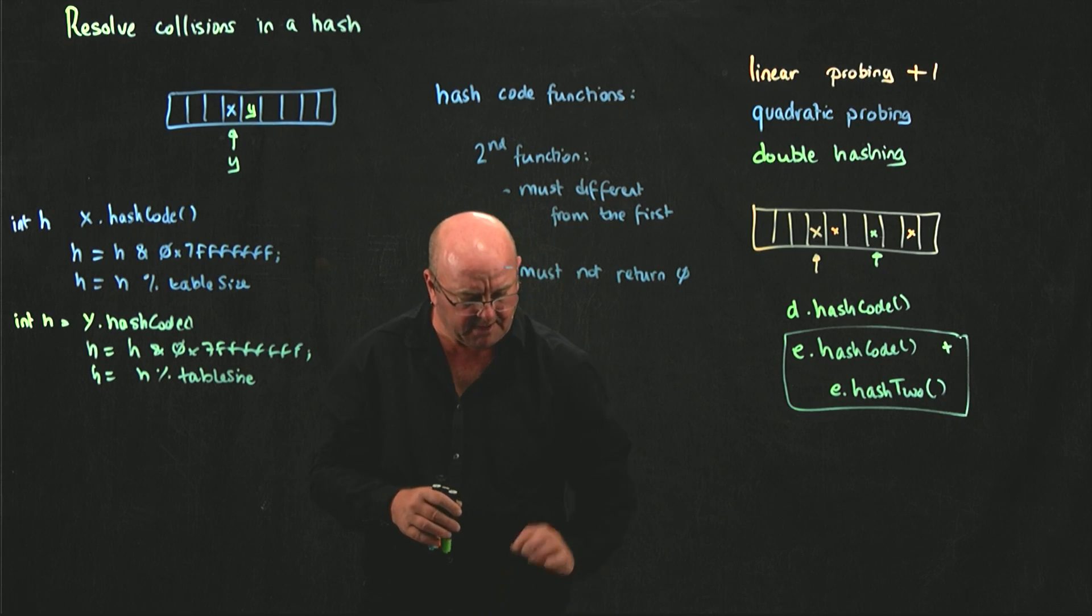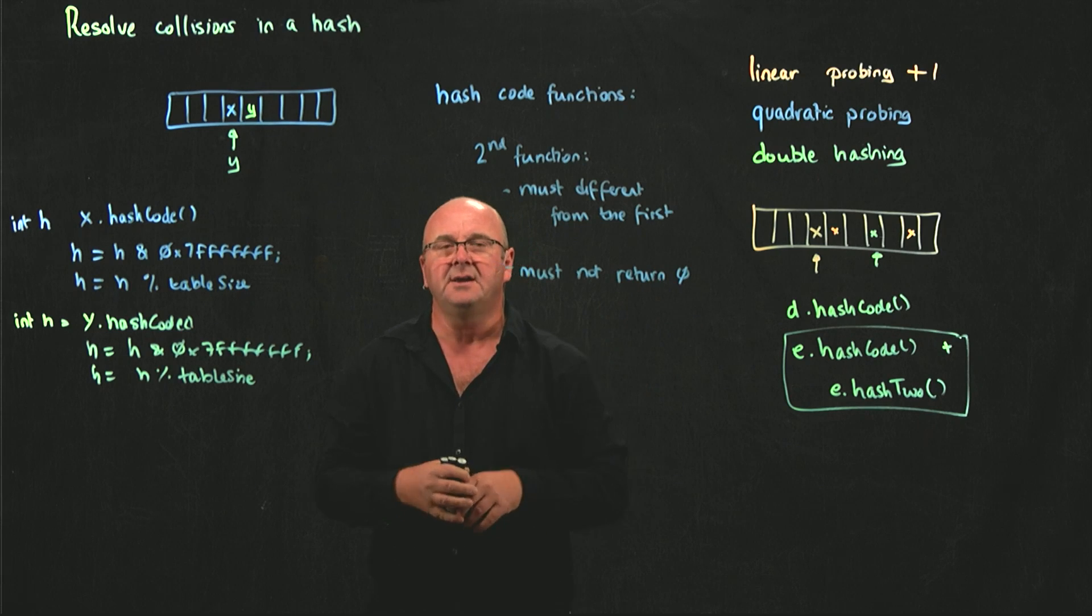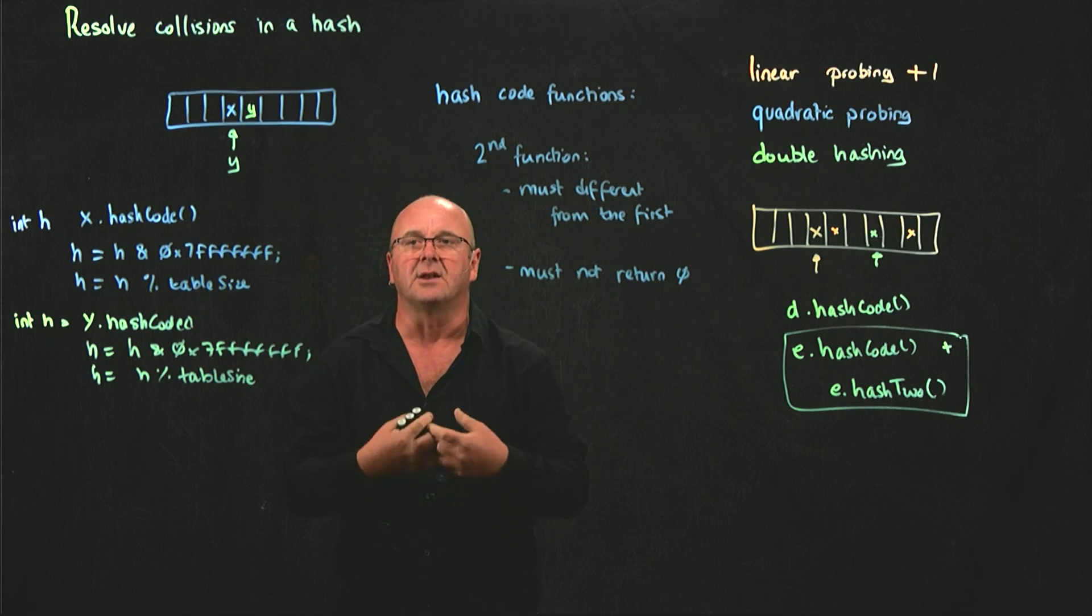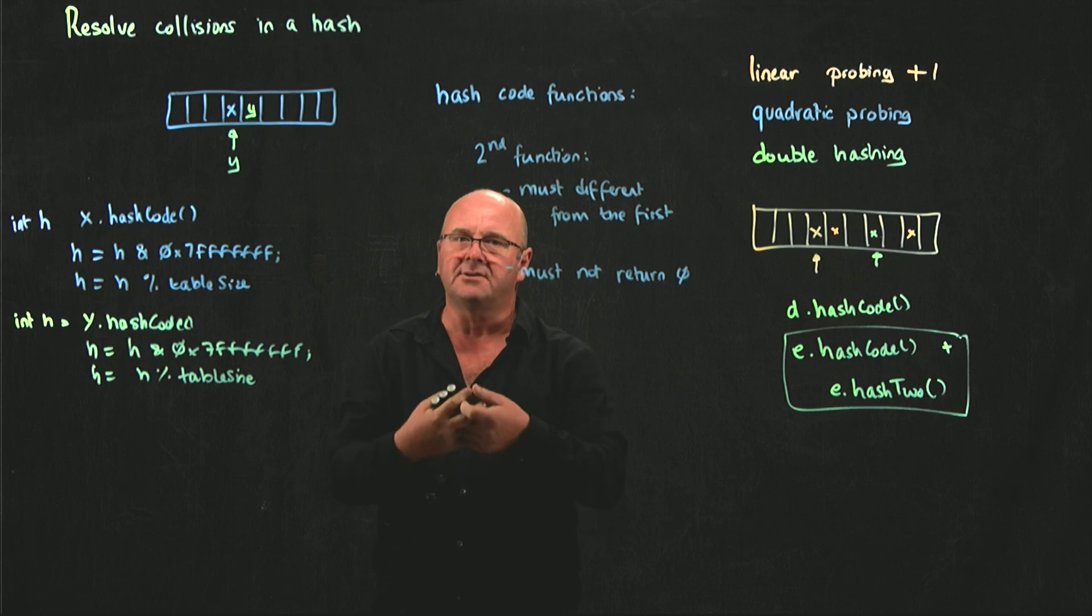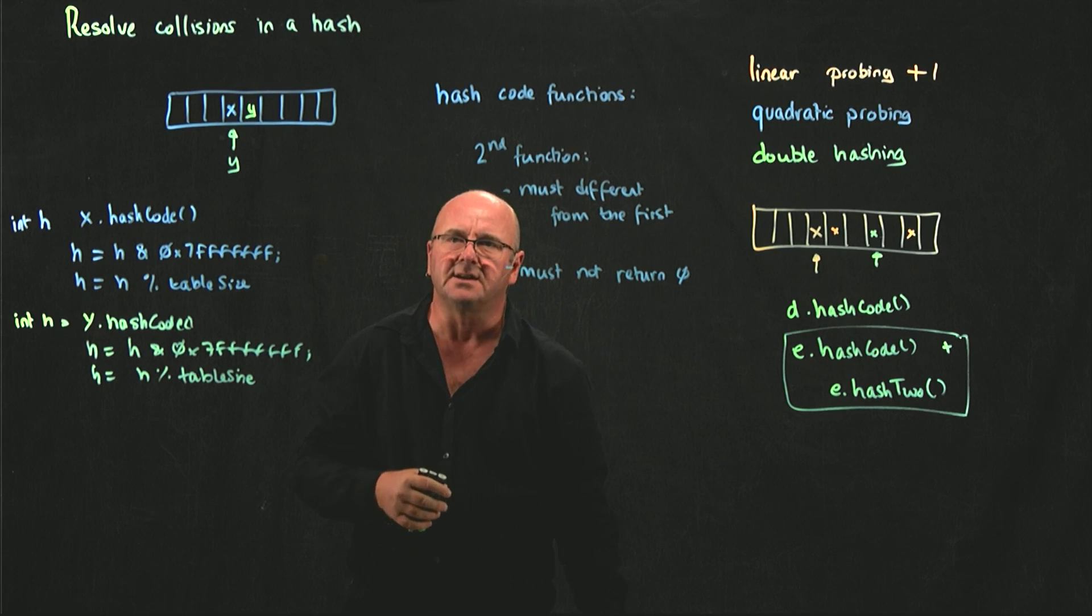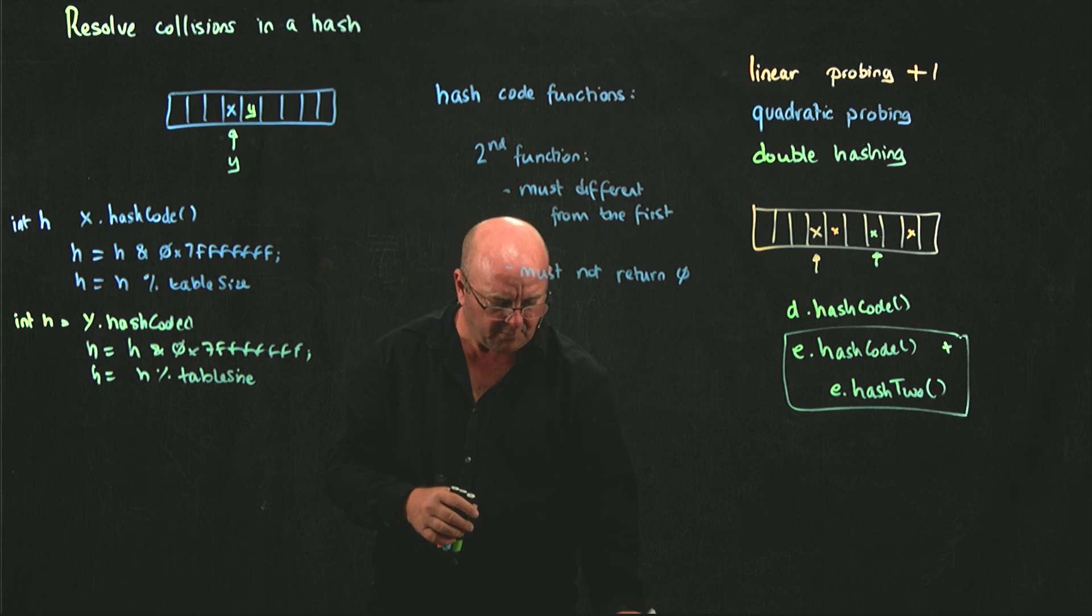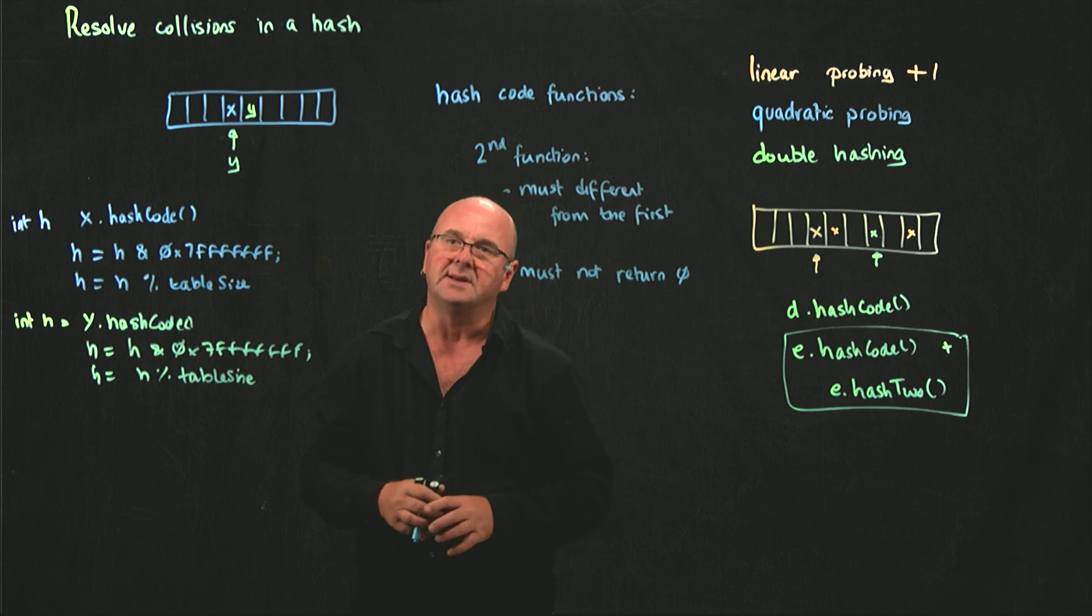With both linear and quadratic probing, you need to, as the load factor lambda increases, you need to consider resizing the table. You need to consider resizing the table once the load factor gets to about 0.6.